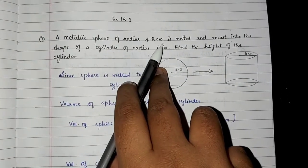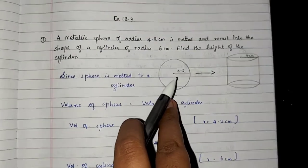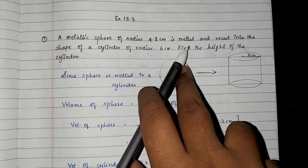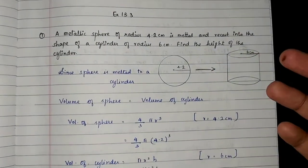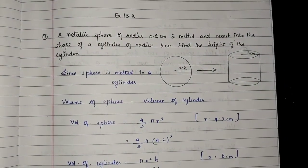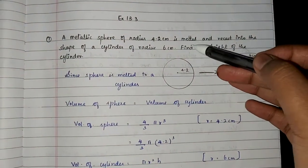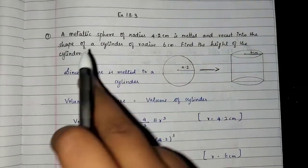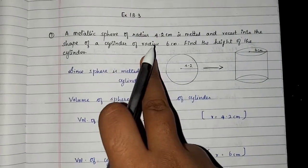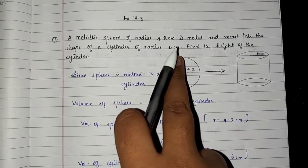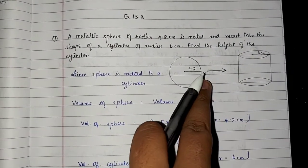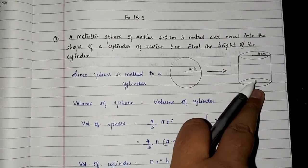So the sphere has radius 4.2 cm. What we do is melt and recast it into a cylinder shape. The cylinder has radius 6 cm. We need to find the height. Since the sphere is melted and recast, the volume remains the same.